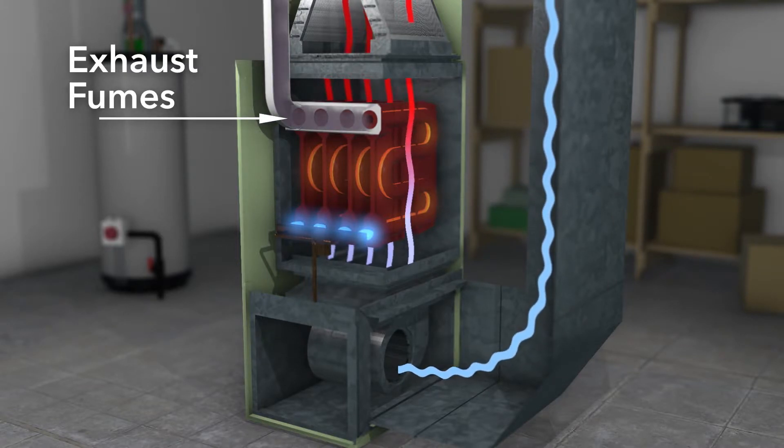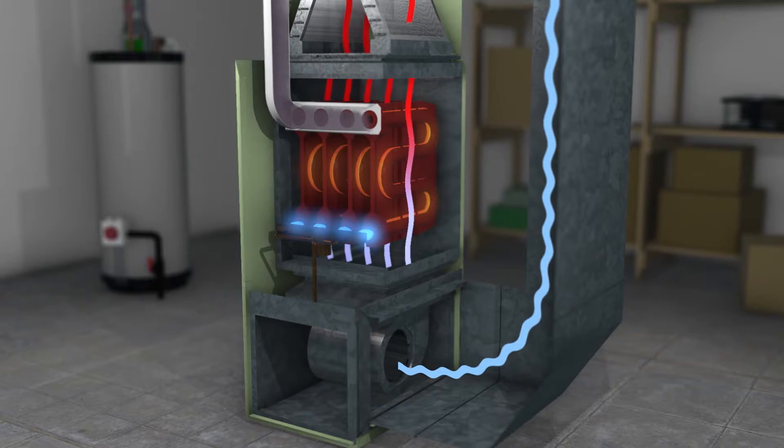Exhaust fumes that include deadly carbon monoxide gas are produced as the fuel is burned. A properly functioning system is designed to keep the fumes inside the heat exchanger and then send them safely out of the house.